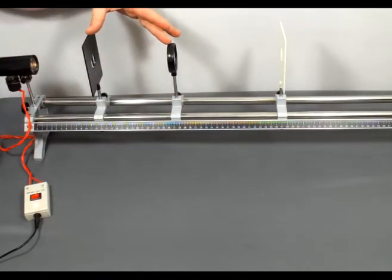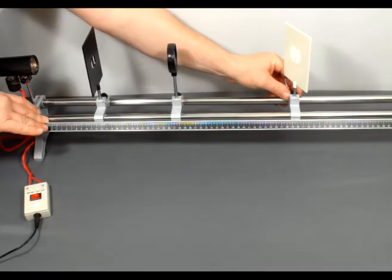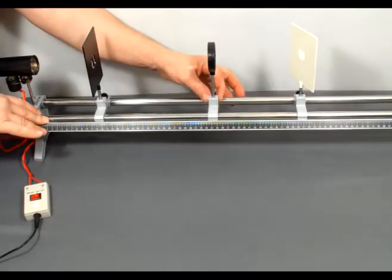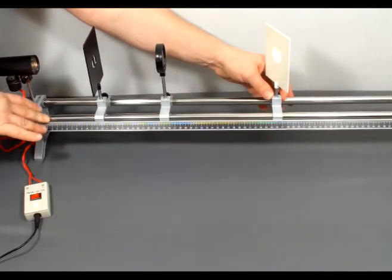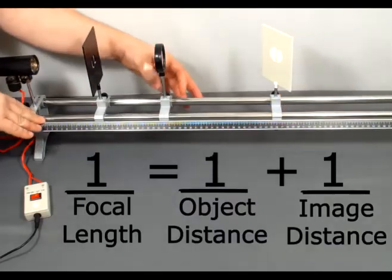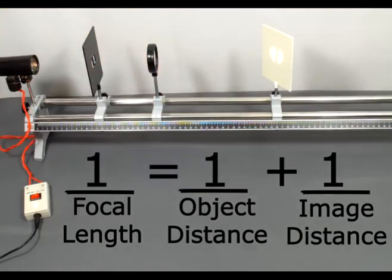So we have our object distance and we have our image distance. The students can vary any one of these and plug this into the formula, and then they can verify the geometric optics of these different lenses.